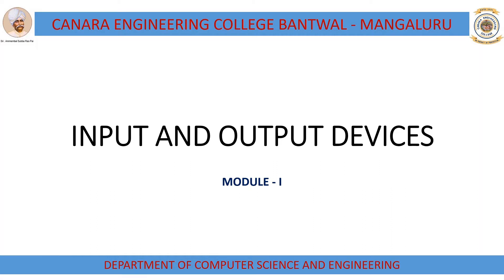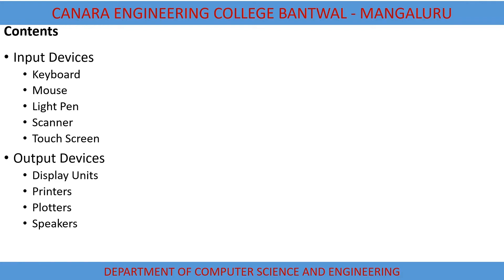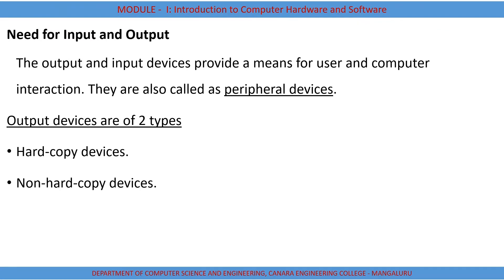Today we will see input and output devices — it's part of Module 1. We are going to see input devices like keyboard, mouse, light pen, scanner, and touchscreen. In output devices we are going to see display units, printers, plotters, and speakers. Input and output devices provide the means for user and computer interaction. Output devices are of two types: hardcopy devices and non-hardcopy devices.